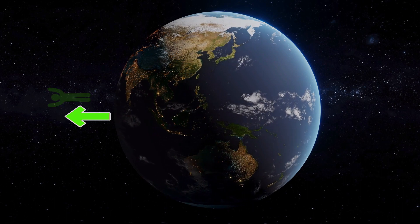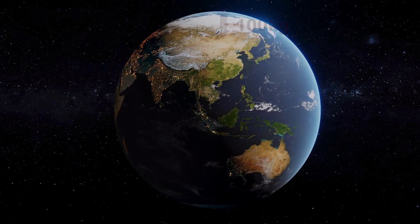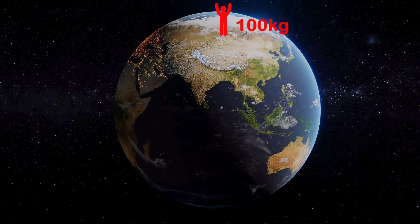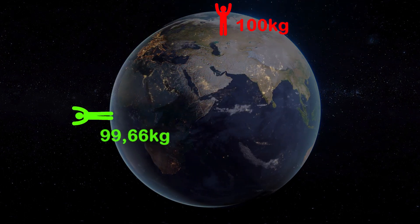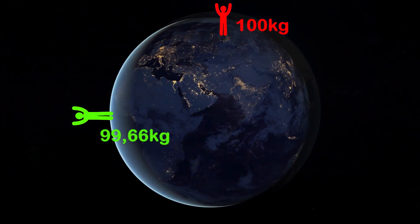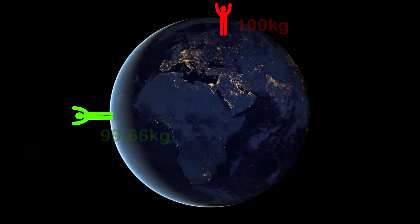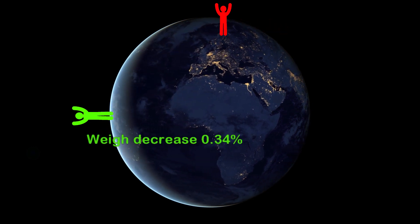Because of this centrifugal force alone, a person who weighs 100 kilograms at the North Pole will weigh about 340 grams less at the equator. So this force reduces your weight about 0.34% when you stand at the equator.